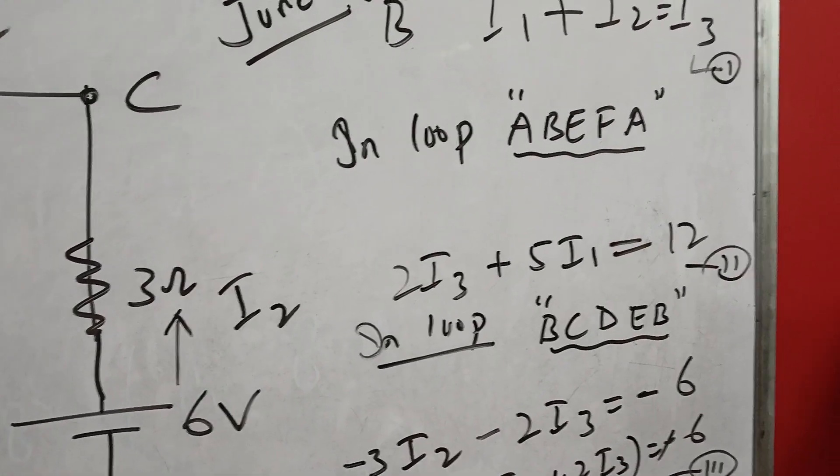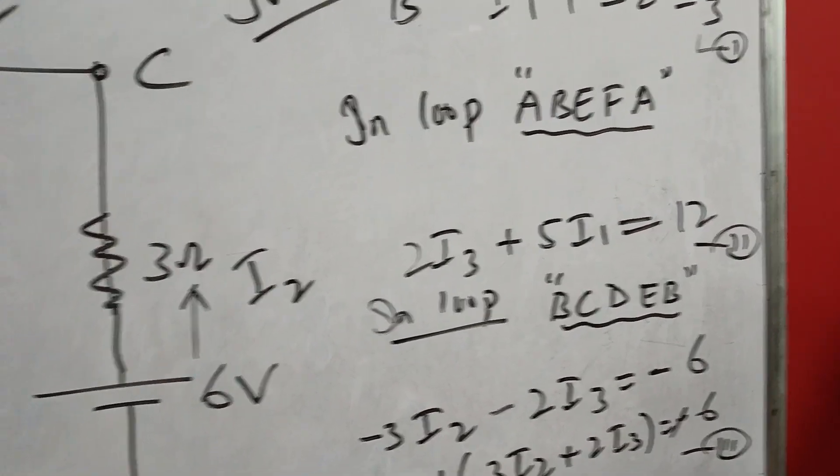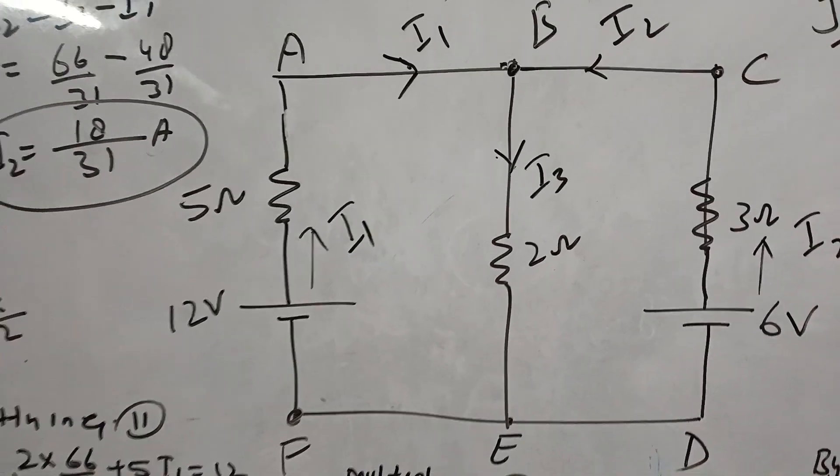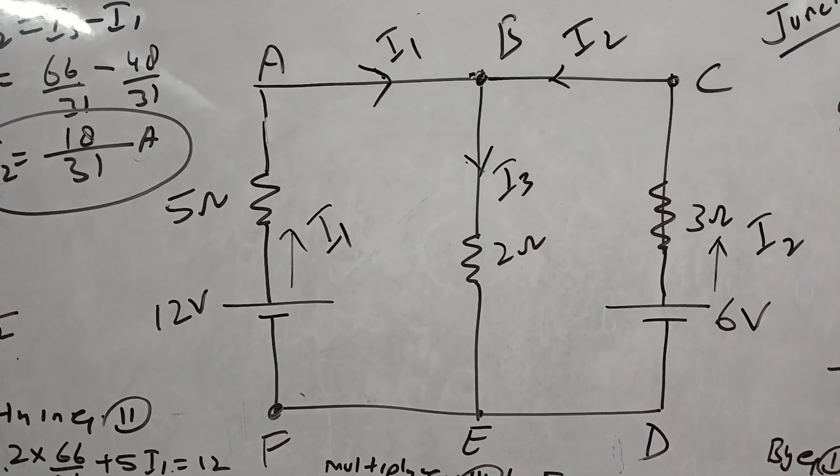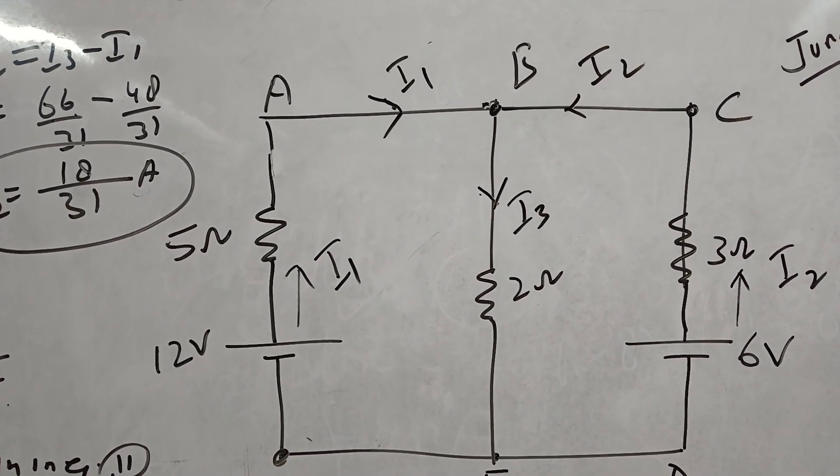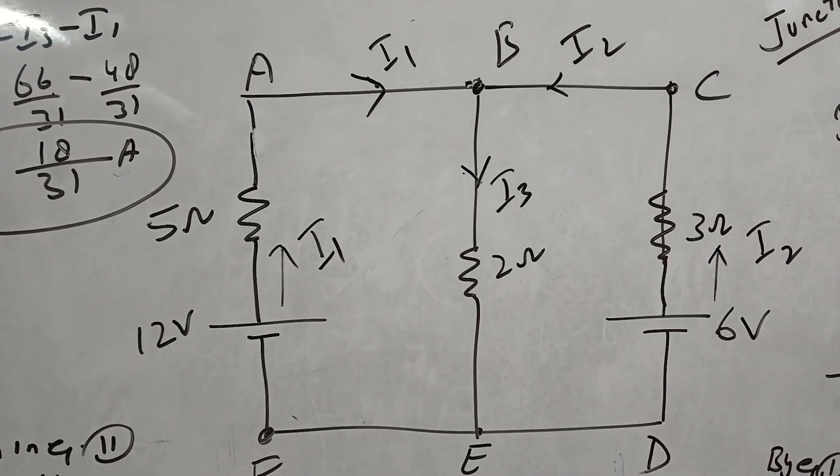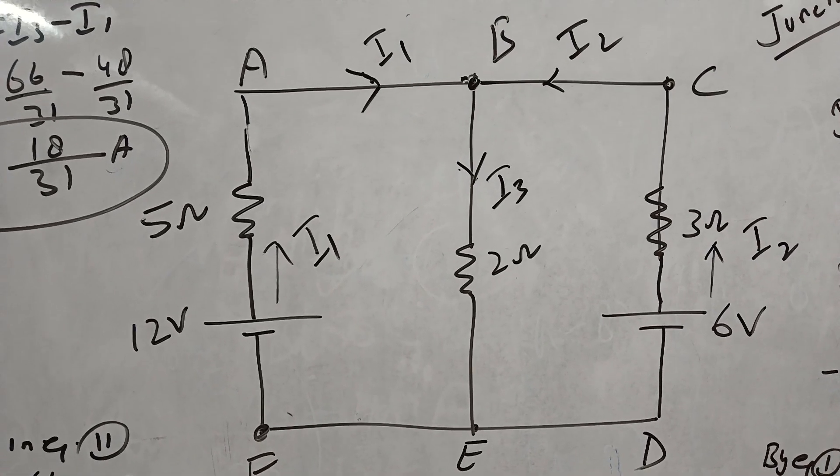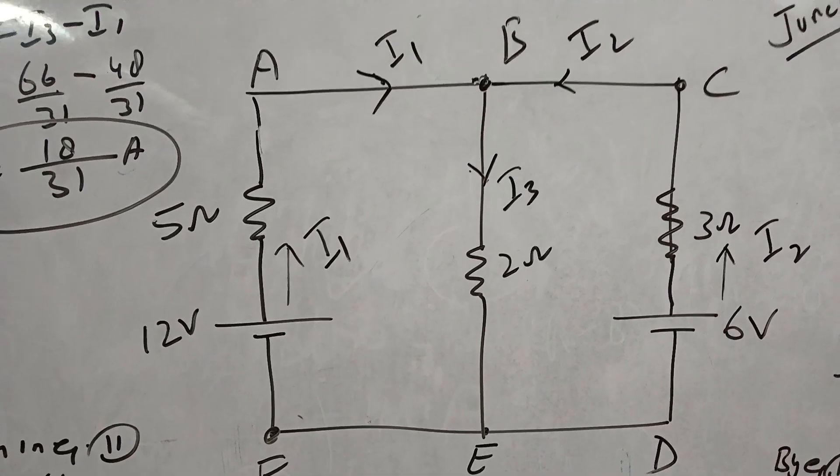Now let us take the loop A, B, E, F, A. If you look at loop ABEFA, we will see A to B current is I1, then B to E is I3. We are going in the same direction: A, B, E, F, A.